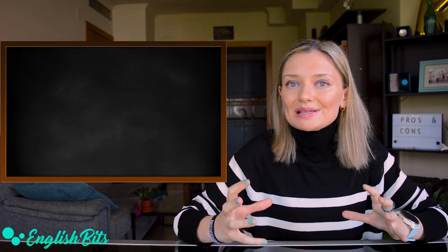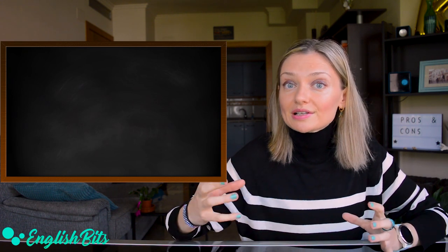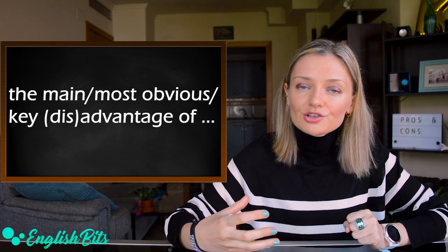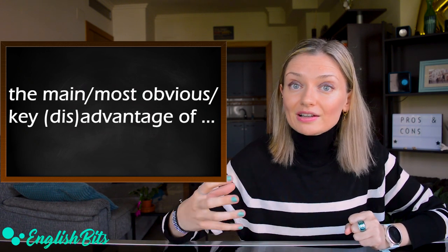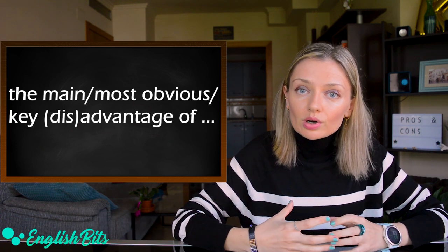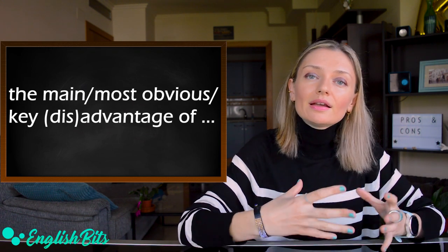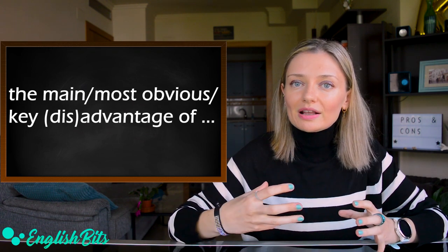Obviously you can say one advantage is, or one of the advantages is, or the advantage of something is. But let's look at some other more original ways to say the same. We could place some words before advantage and disadvantage. For instance, we could say the main advantage or the main disadvantage of something is. Or we can also say the most obvious or the key advantage or disadvantage of something.